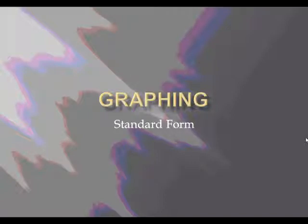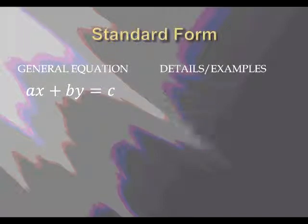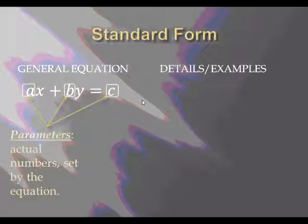We're going to take a look at the first one today, called standard form. The general equation looks like this: Ax plus By equals C. Let's talk about the details of it. The A, the B, and the C are called parameters. A parameter is a fancy word for saying that it's a real number.